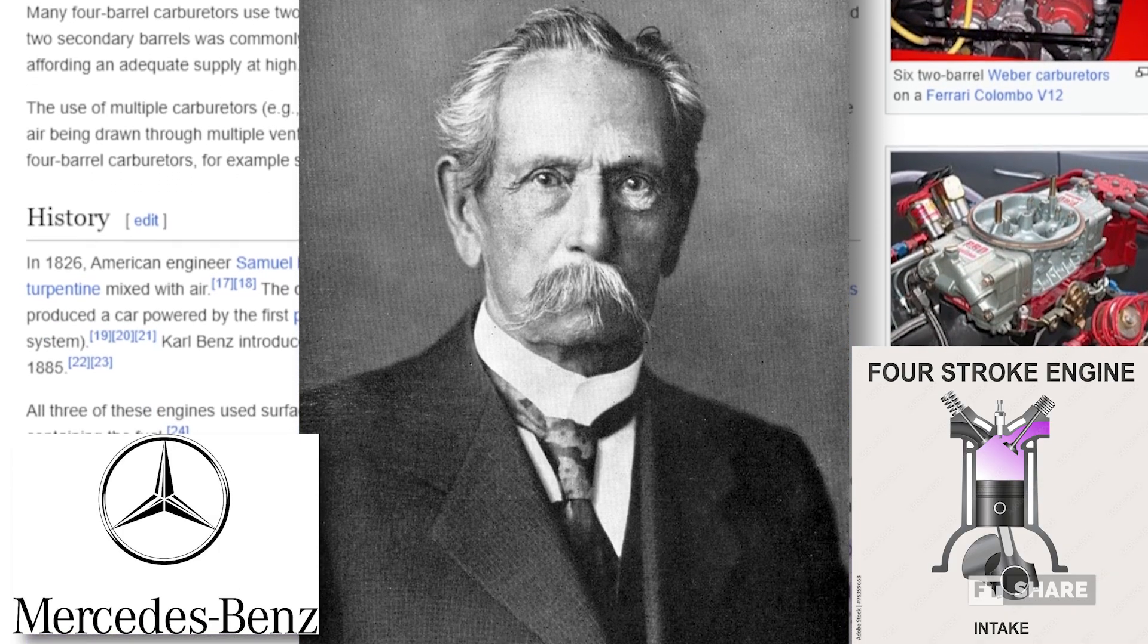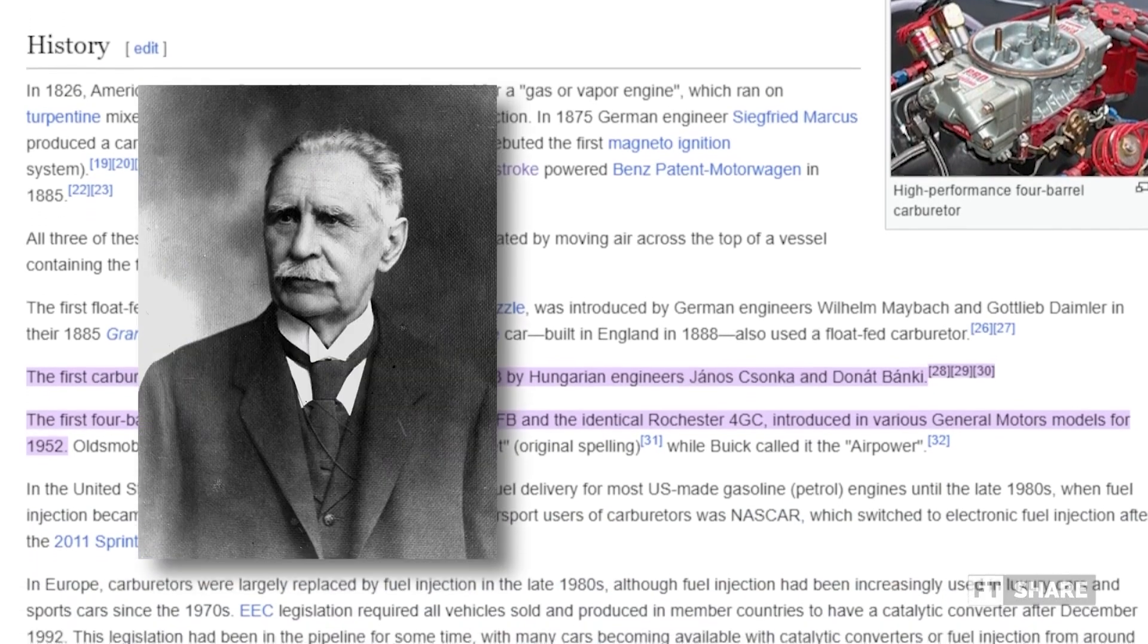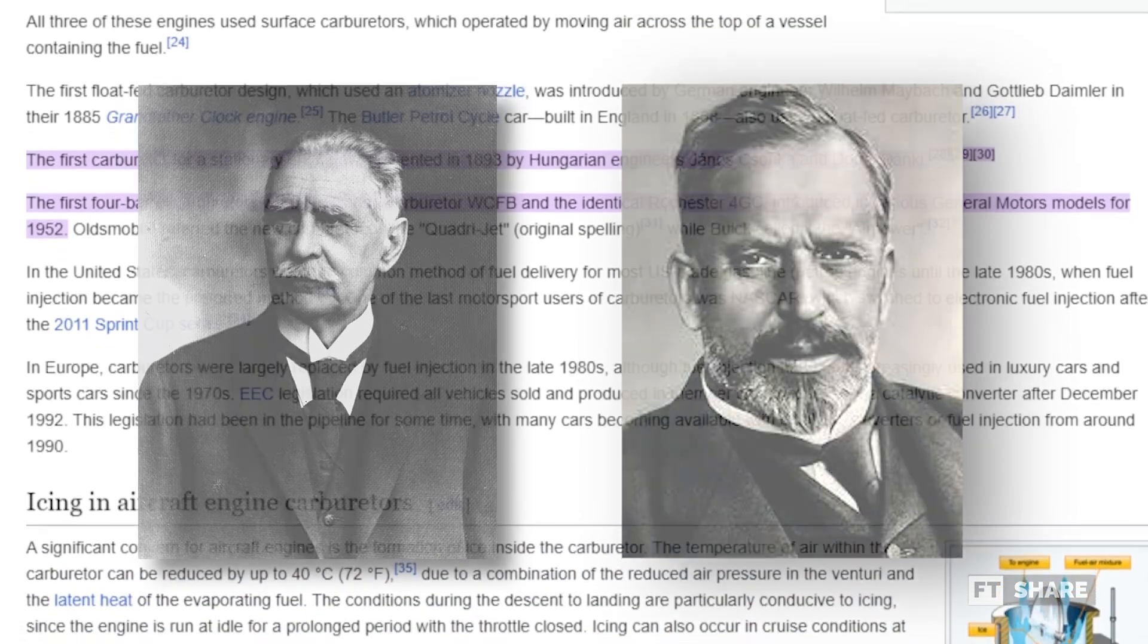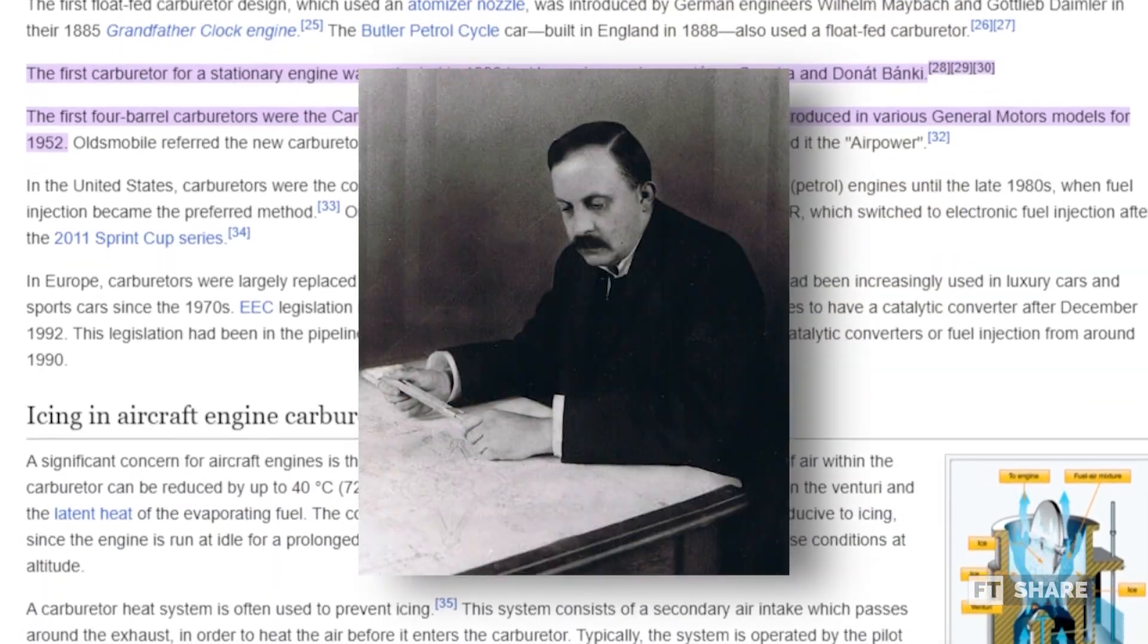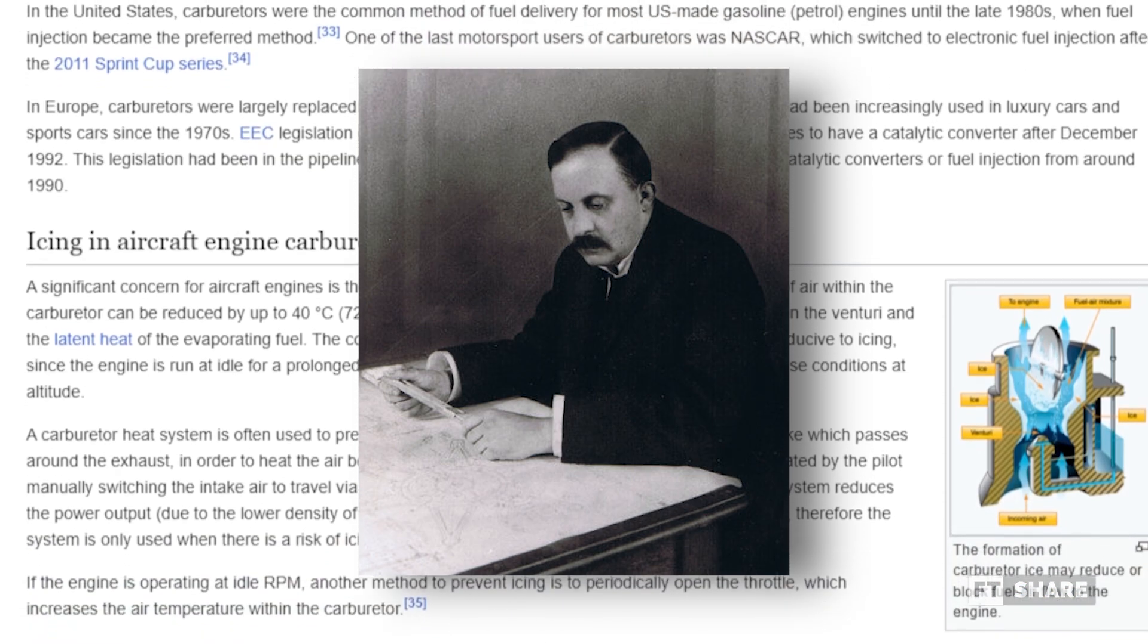which is still in use today. In 1893, Hungarian engineers Janos Čnka and Donat Banke designed a device similar to the one previously mentioned. Later, Frederick William Manchester further developed this carburetor for use in four-wheeled vehicles.